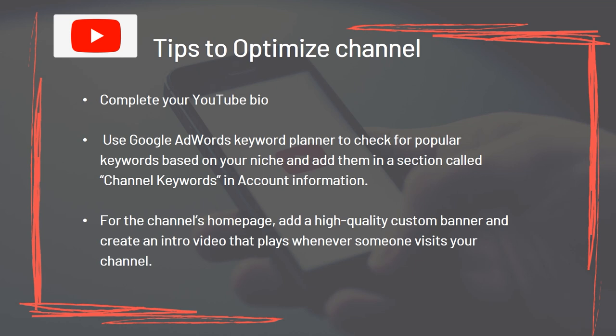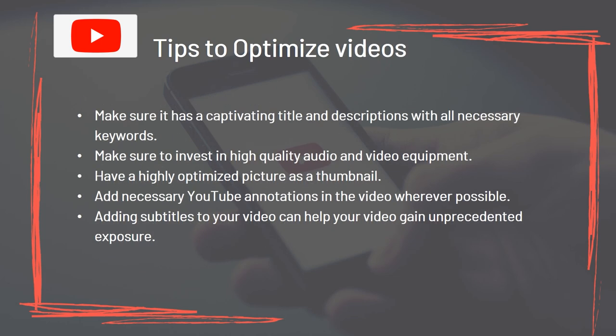Tips to Optimize Channel: Complete your YouTube bio. Use Google AdWords Keyword Planner to check for popular keywords based on your niche and add them in a section called Channel Keywords and Account Information. For the channel's homepage, add a high-quality custom banner and create an intro video that plays whenever someone visits your channel. Tips to Optimize Videos: Make sure it has a captivating title and descriptions with all necessary keywords. Make sure to invest in high-quality audio and video equipment. Have a highly optimized picture as a thumbnail. Add necessary YouTube annotations in the video whenever possible. Add subtitles to your video to help it gain unprecedented exposure.